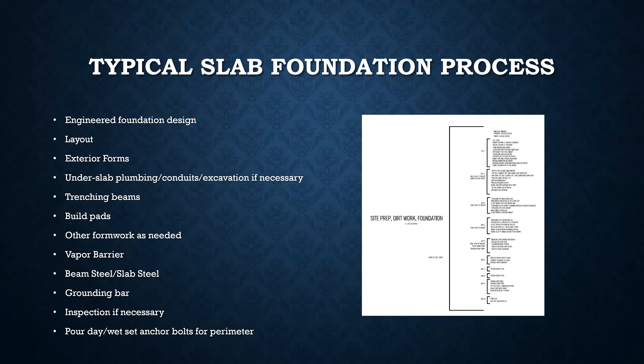Now let's talk about the slab foundation process. The first step is to get an engineered foundation design — for most houses you need this to determine where exactly your beams should go, how deep they should be, what steel goes in the beams and in the mat, where all the connections go, and whether you need any special details from an engineer such as for a big drop in the foundation. That design comes from your architectural plans, which you give to the engineers, and they produce the foundation specs.